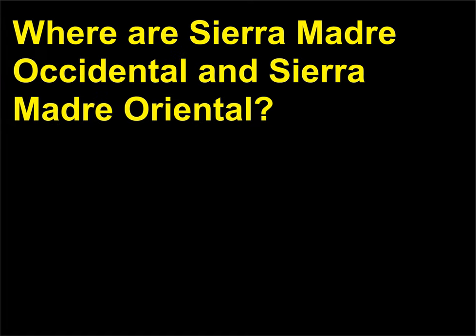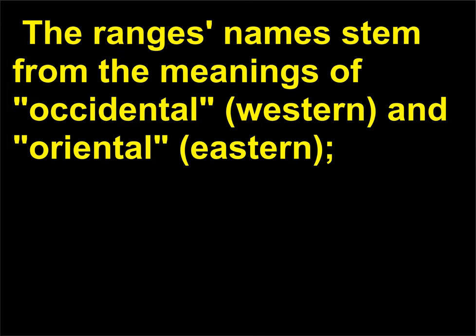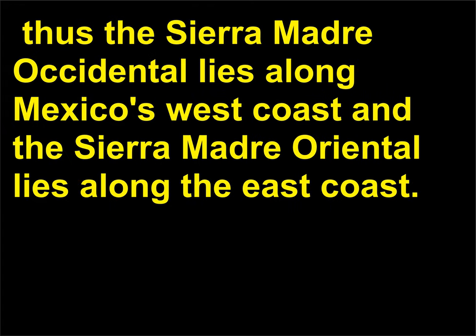Where are the Sierra Madre Occidental and Sierra Madre Oriental? The Sierra Madre Occidental and Sierra Madre Oriental are two mountain ranges in Mexico. The ranges' names stem from the meanings of Occidental (Western) and Oriental (Eastern). Thus the Sierra Madre Occidental lies along Mexico's west coast and the Sierra Madre Oriental lies along the east coast.